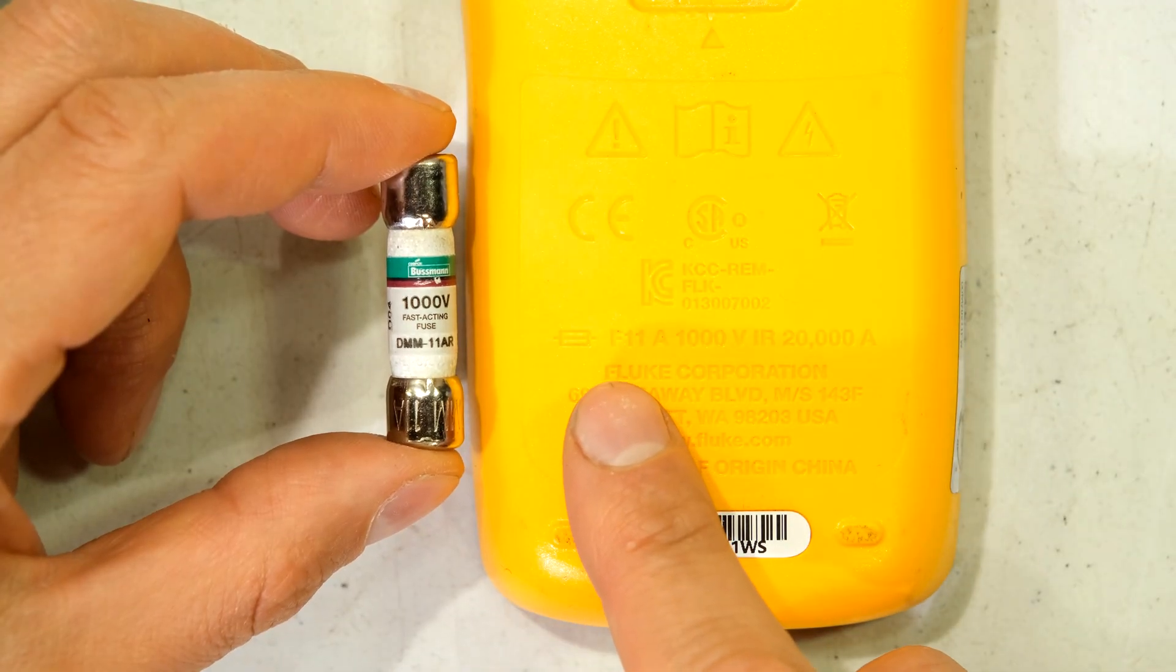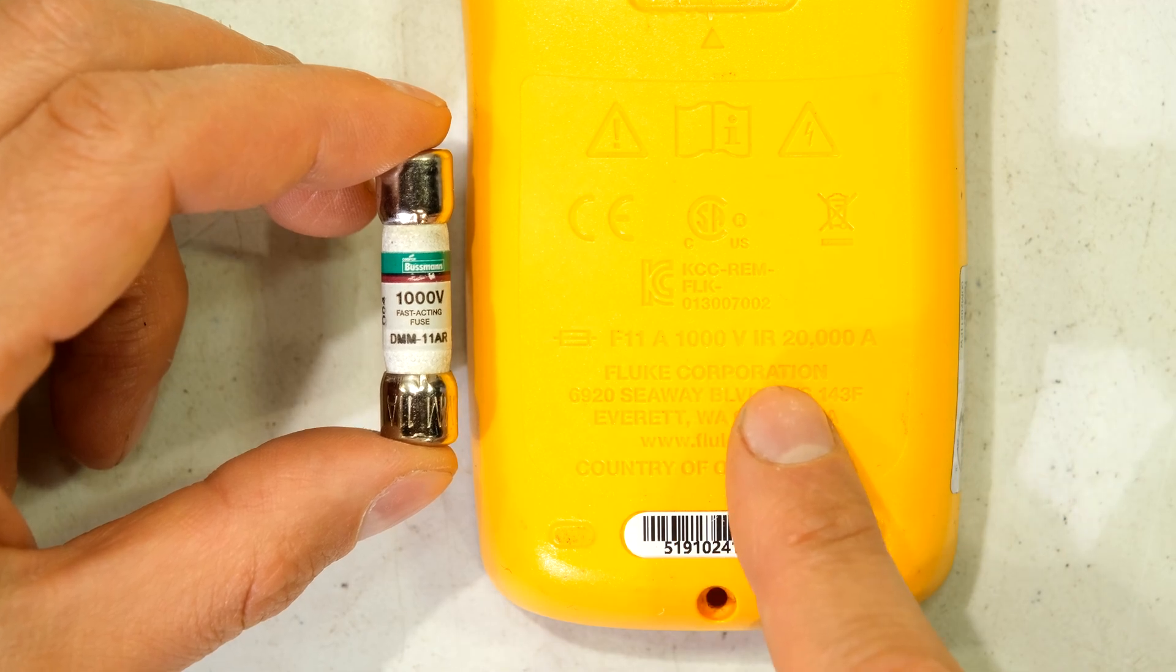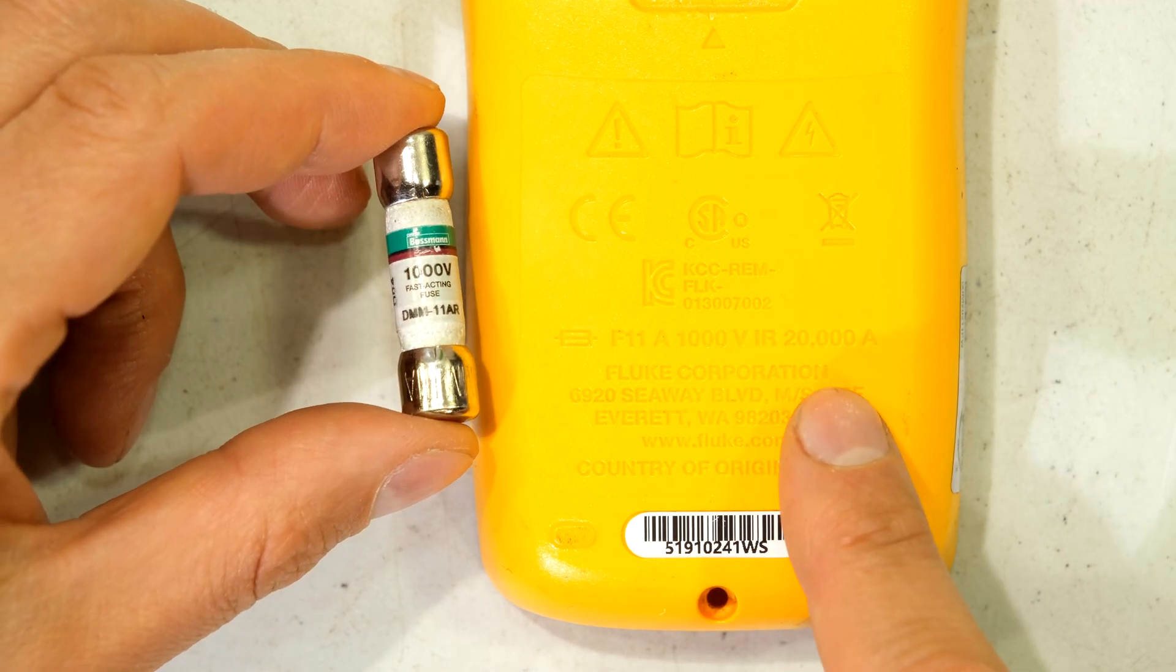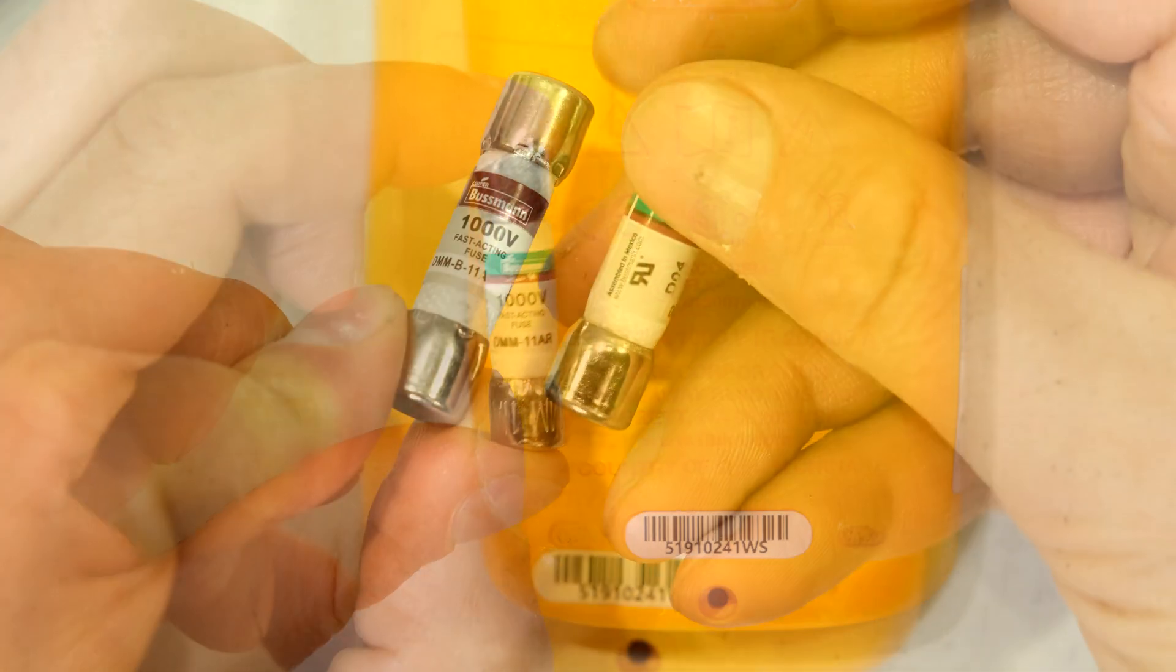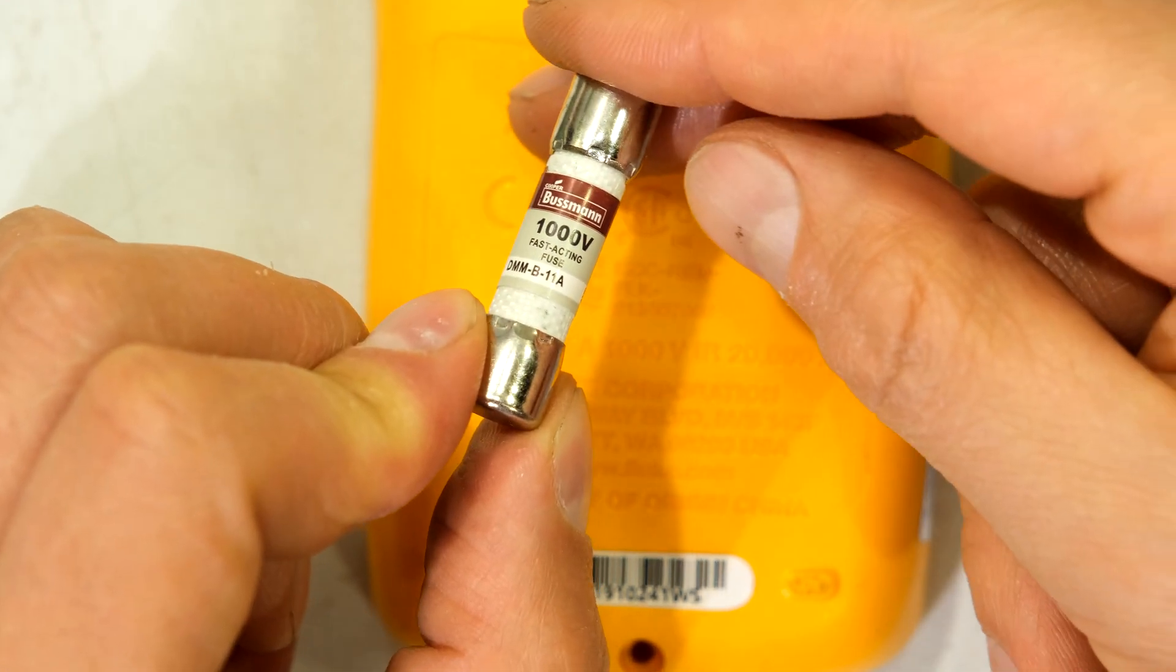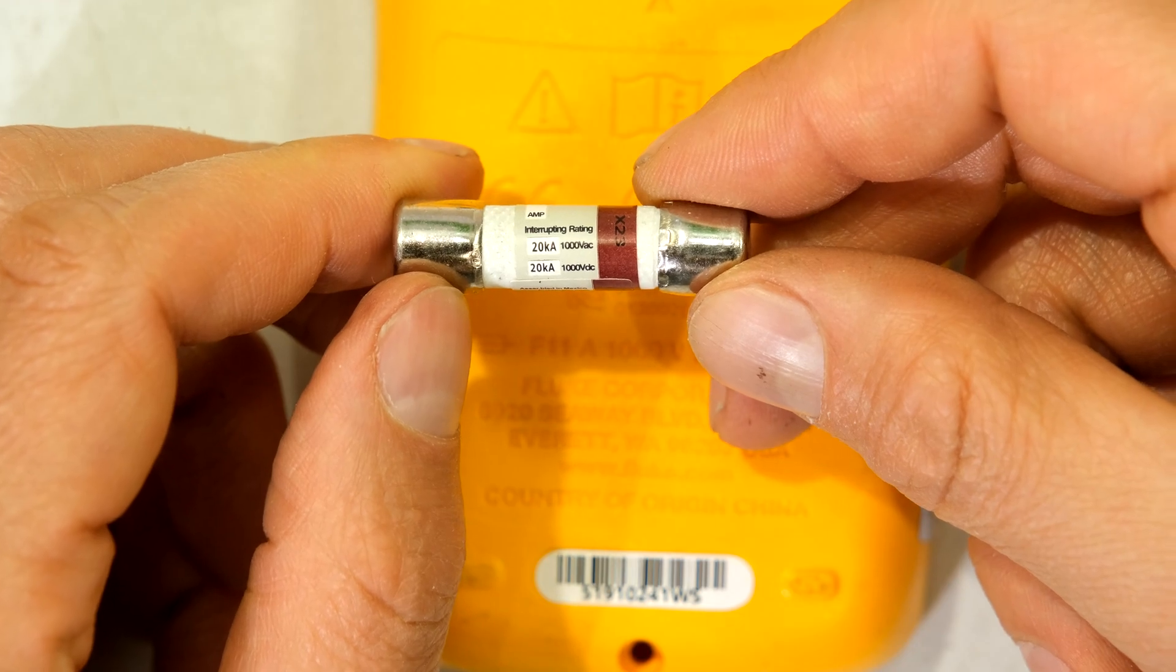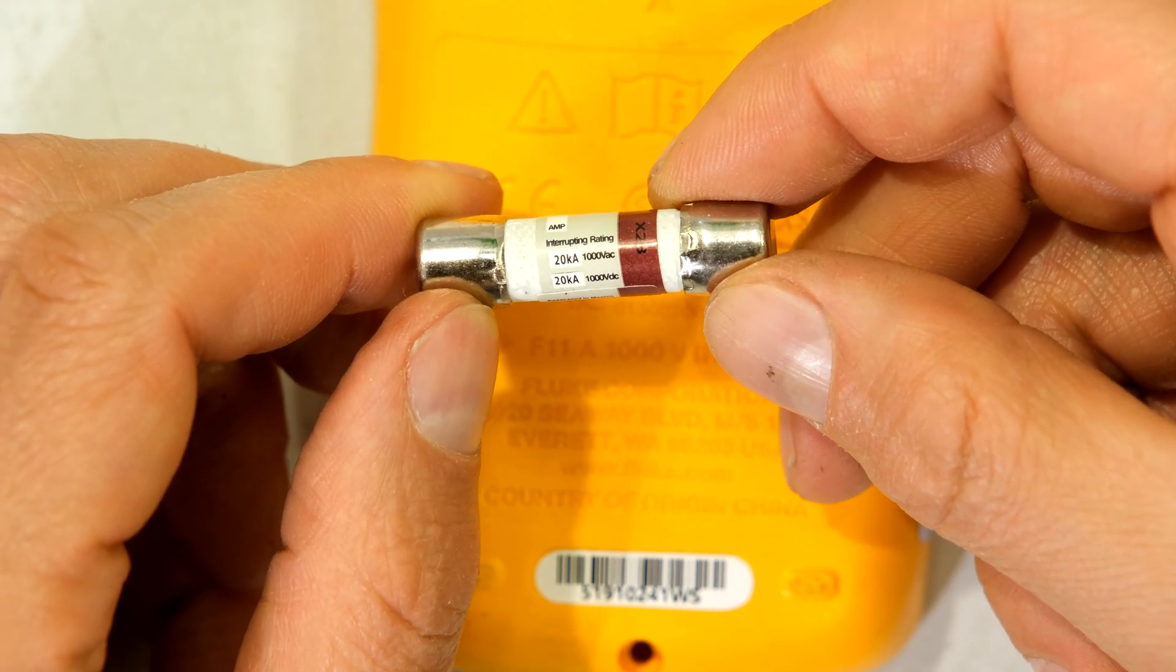The size of the fuse for this multimeter is an 11 amp 1000 volt with an interrupting capacity of 20,000 amps. This is the fuse that was inside the unit, it is a Bussman fuse. I could not get this fuse but I have a similar one. This is also a 1000 volt 11 amp fuse also with 20 kiloamp interrupting capacity for both DC and AC.